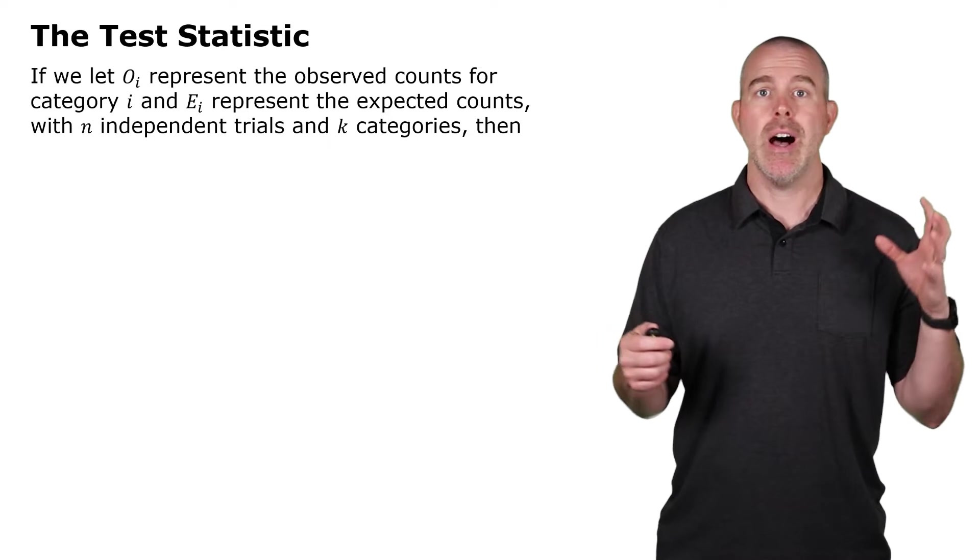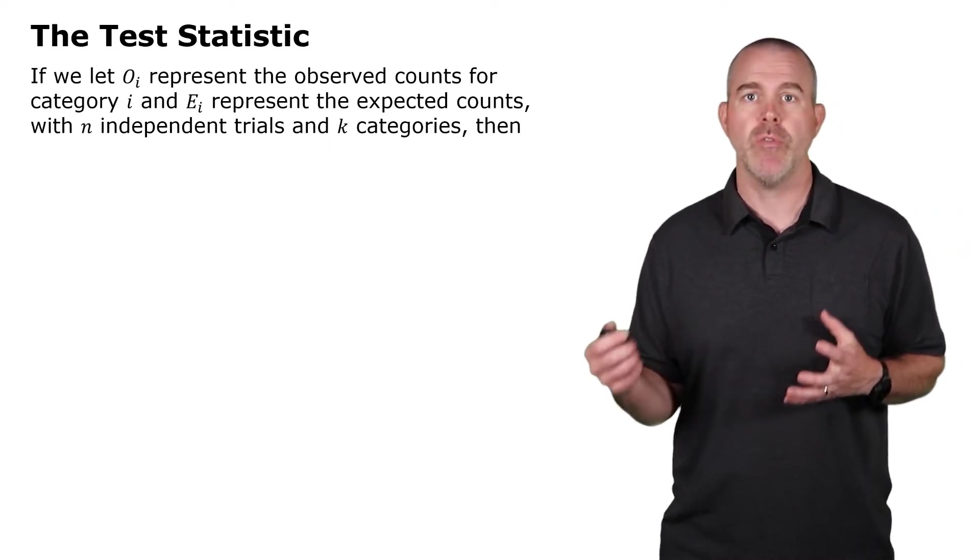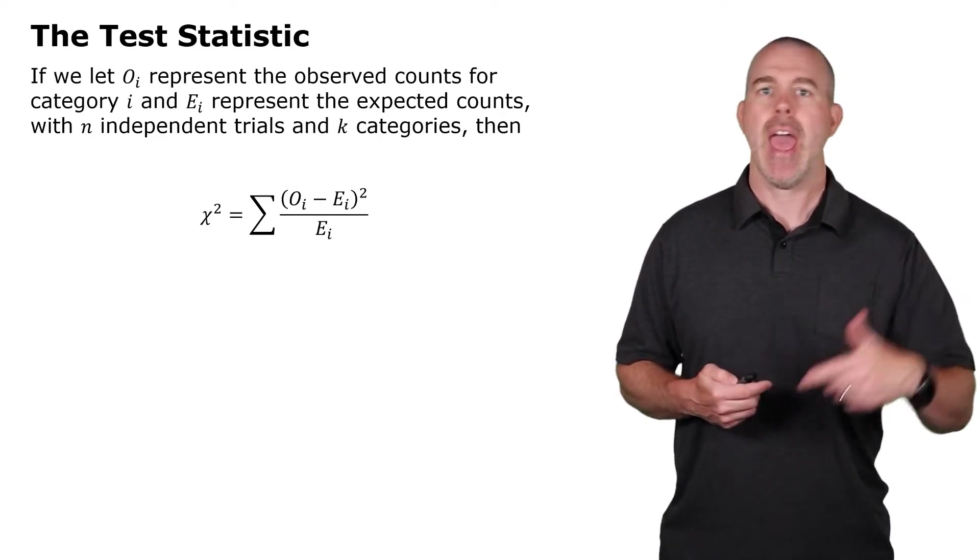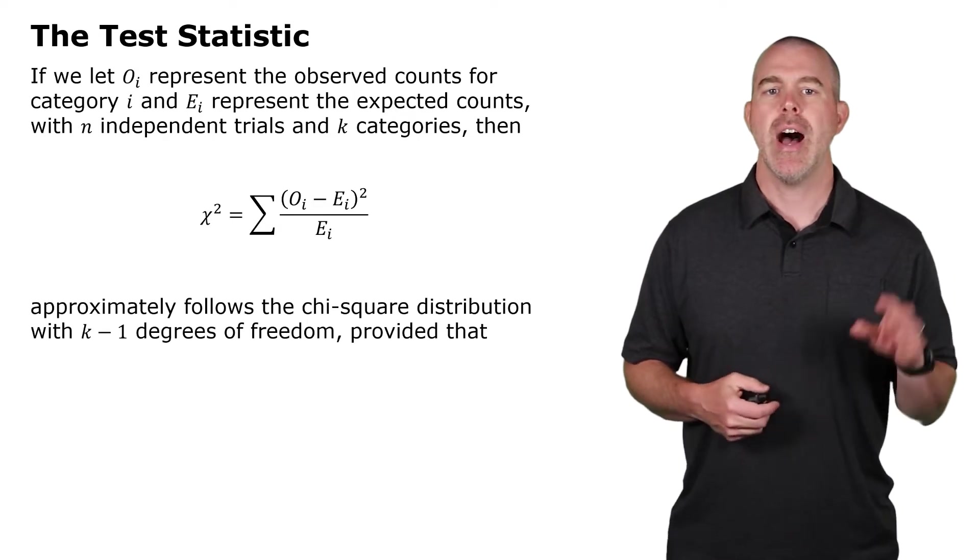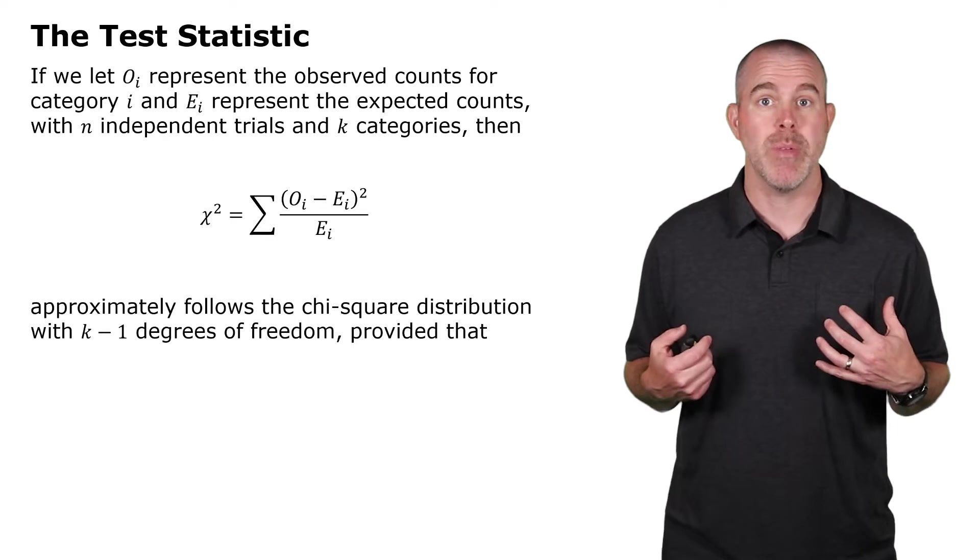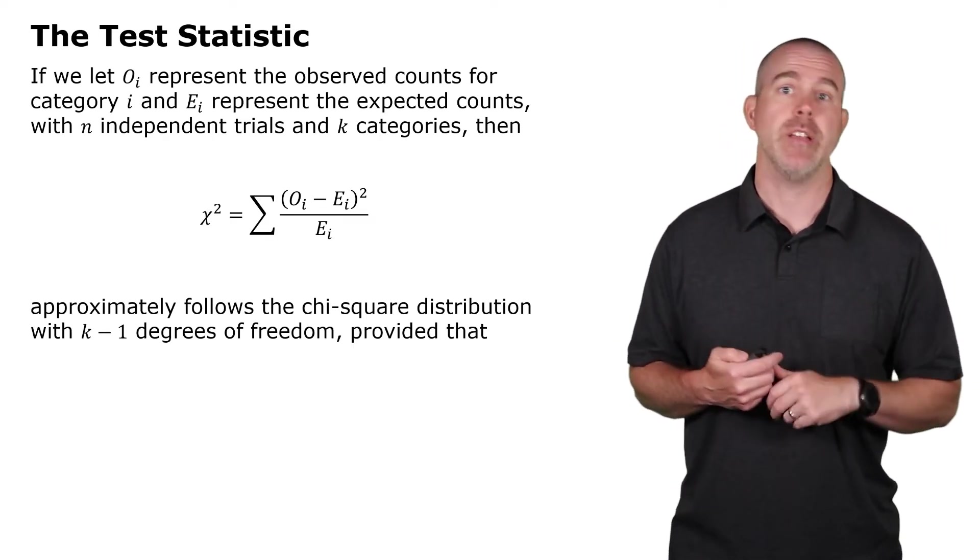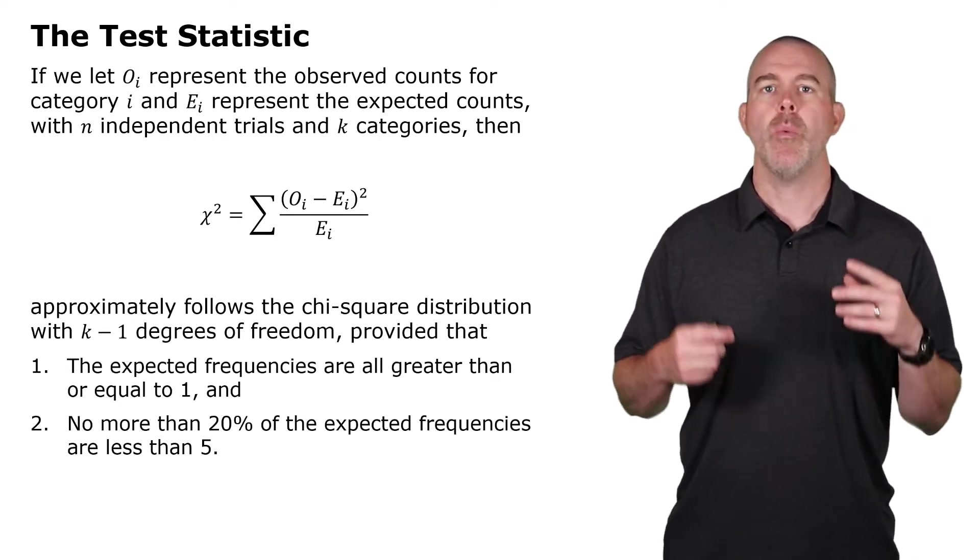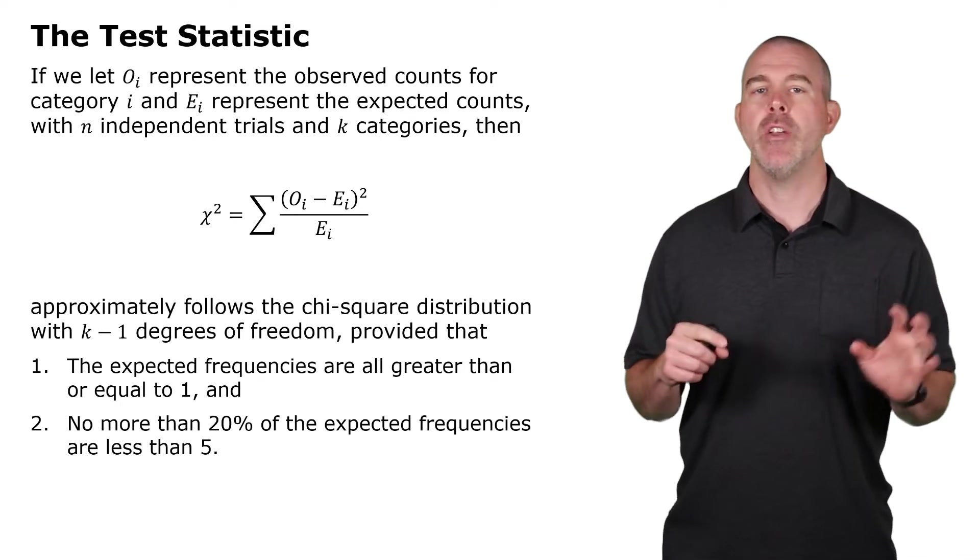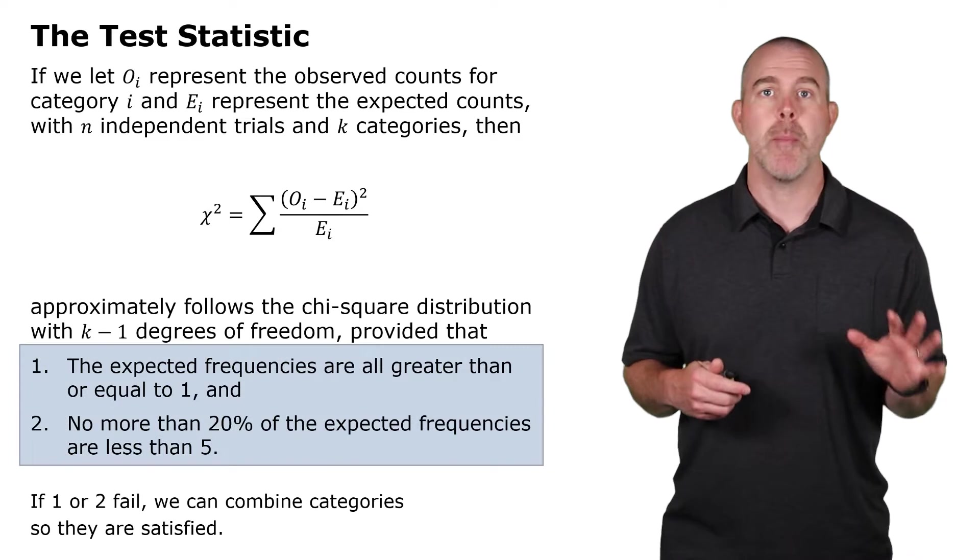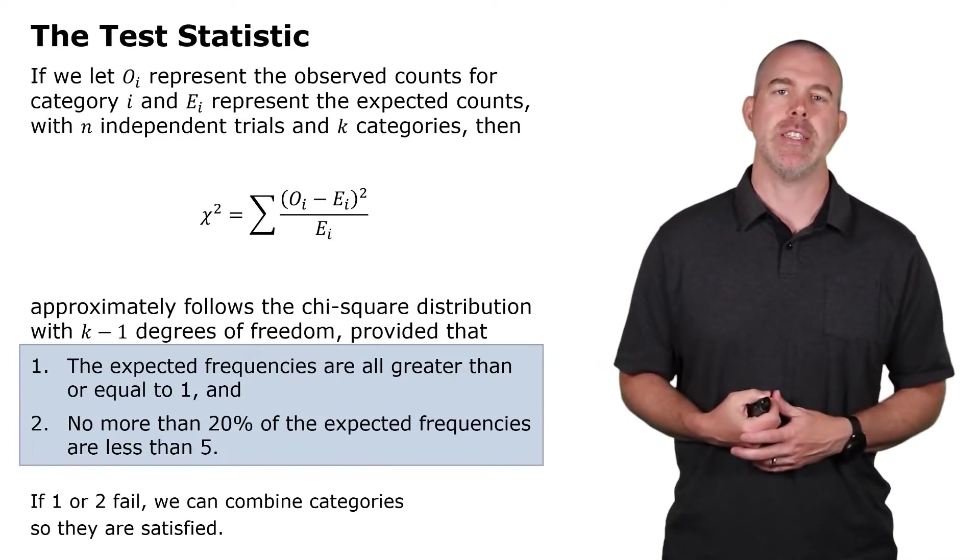Alright, you know the drill. If we're going to test this, we need a test statistic. So, we're going to do another chi-squared. It's an observed versus expected. So, observed minus expected, squared, divide by the expected, and then add all of those up. Follows the chi-squared distribution with k minus one degrees of freedom here, k is the number of categories. So, for us, that would be six categories. So, we would have five degrees of freedom. It's the same as the other chi-squared distribution ones where we have to have all the frequencies at least one, and no more than 20% of them can be less than five. If those conditions aren't met, what we can do is combine some categories until they are.